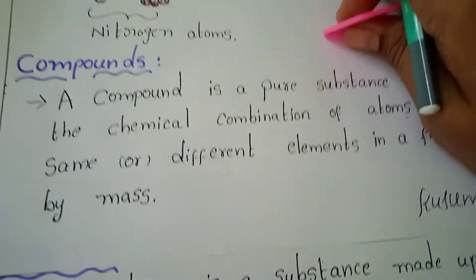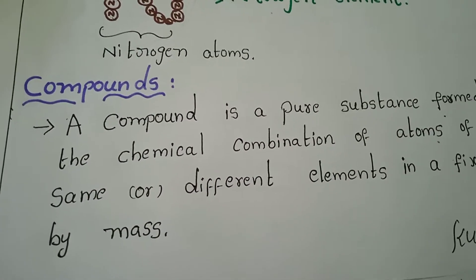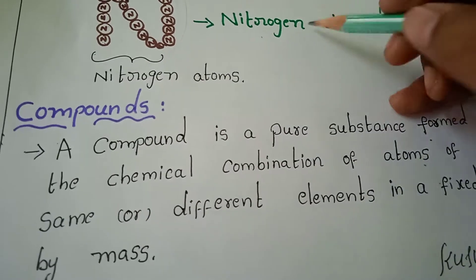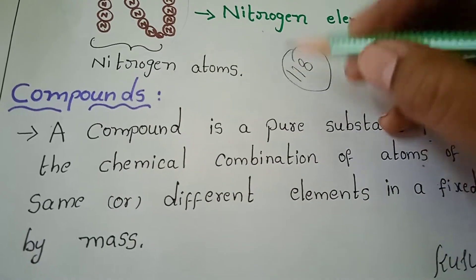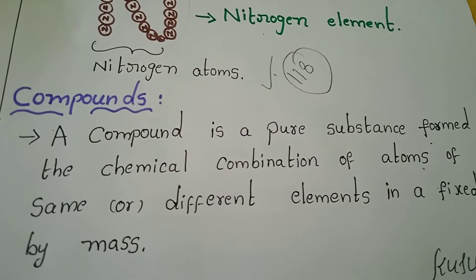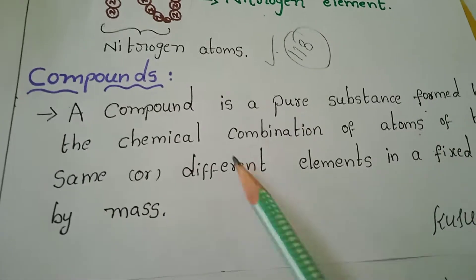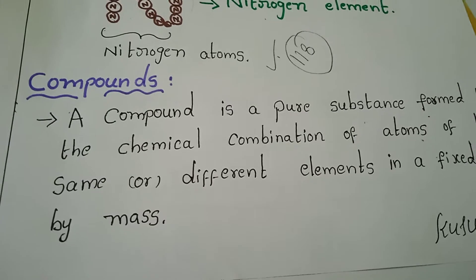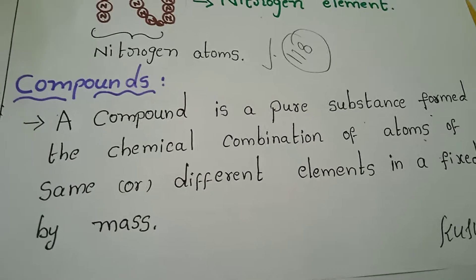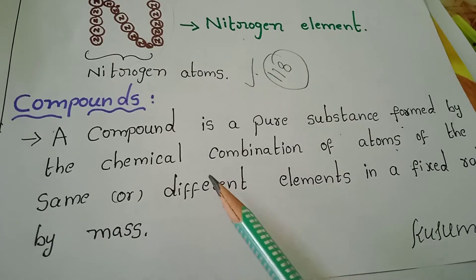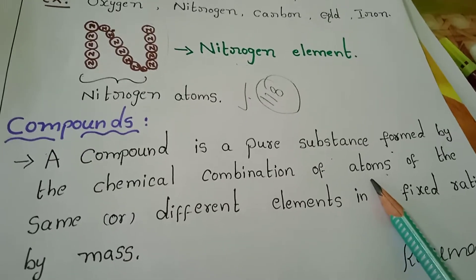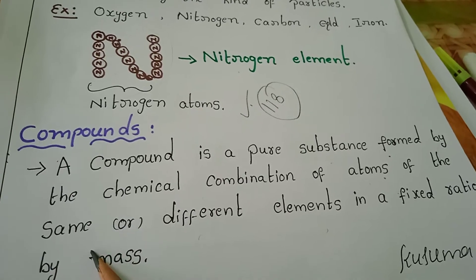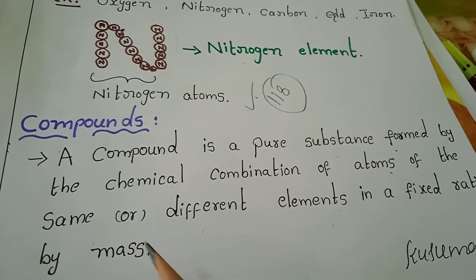Next one: compounds. Already I introduced oxygen, nitrogen, and carbon as separate atoms. There are 118 elements. A compound is a pure substance formed by the chemical combination of atoms of the same or different elements in a fixed ratio by mass.